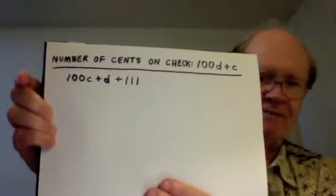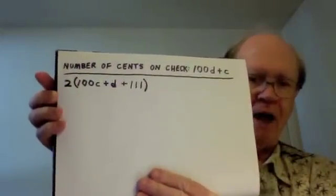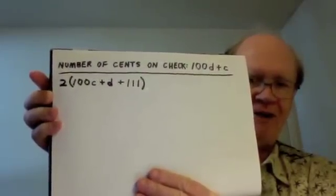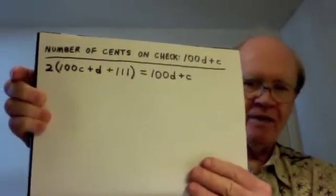Now we are told that in an attempt to make things right, the teller gave the customer in addition a dollar, a dime, and a penny — that's an additional 111 cents. That still wasn't right. So the teller did some careful arithmetic and as a result gave the customer an additional amount exactly equal to what he had given so far. And so I have multiplied that amount in parentheses by 2. And we are told that made things right — that that amount actually equals 100D plus C.